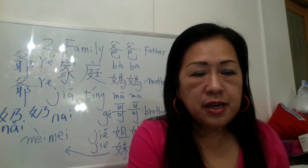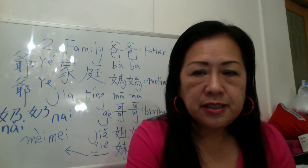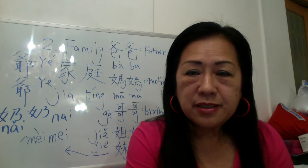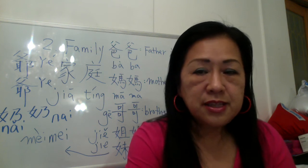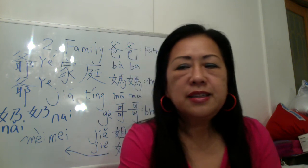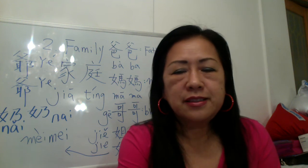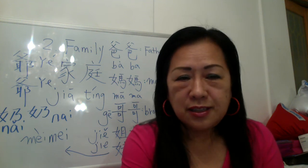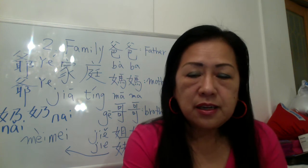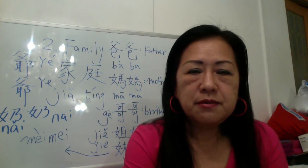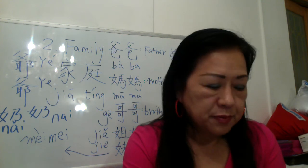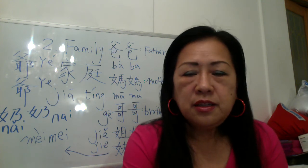If I say the Chinese, you answer in English. 那 means 'that.' 这 means 'this.' 的 is possessive — belongs to someone, like apostrophe-S.